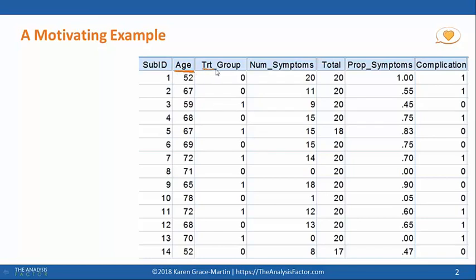Our outcome variable might be, say, number of symptoms. Maybe we're giving them something like a depression questionnaire and it has 20 items and it says do you experience this symptom yes or no. So out of these 20 questions maybe this person has 20 yeses, this person has 11, this person has 9.